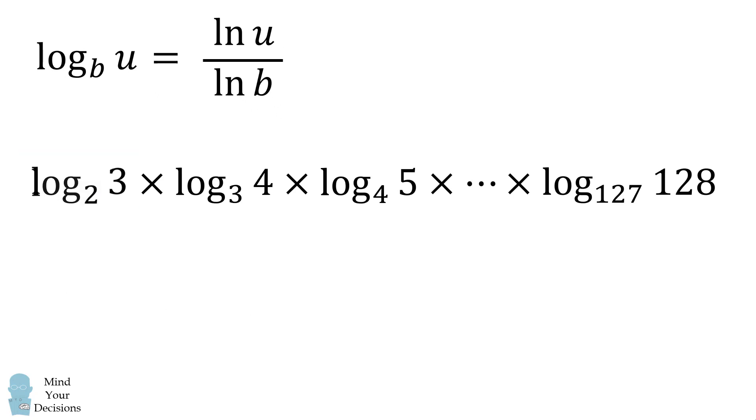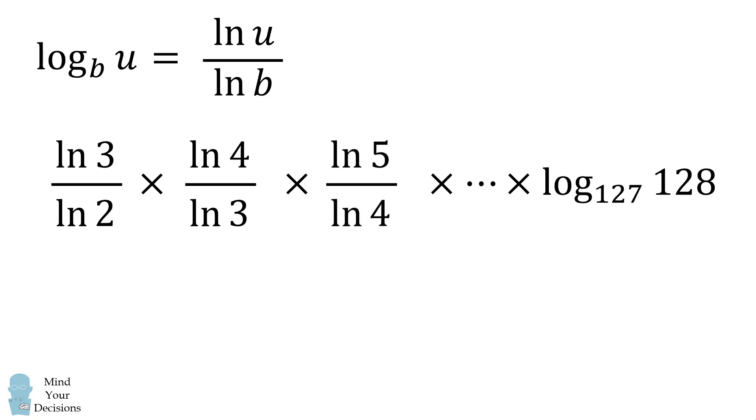The first term becomes the natural log of 3 over the natural log of 2. The second term becomes the natural log of 4 over the natural log of 3. We continue to apply this formula all the way to the very end of this product.